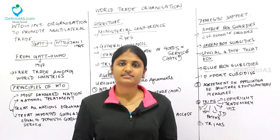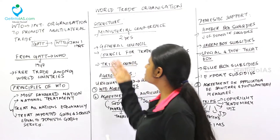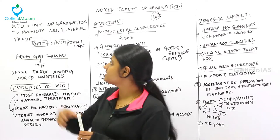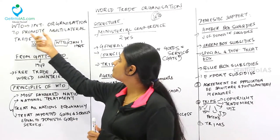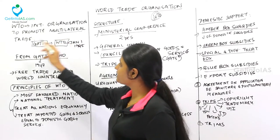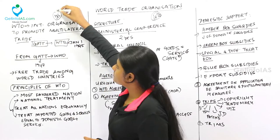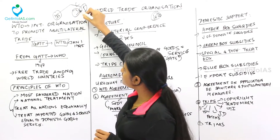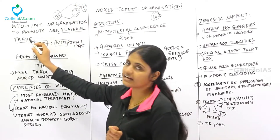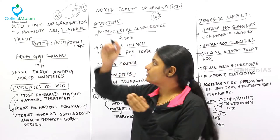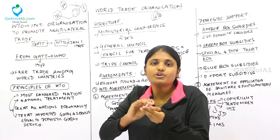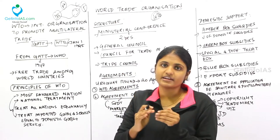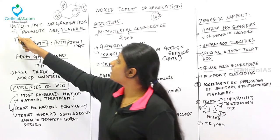Welcome to Get Into IAS. In this video we're going to deal with the World Trade Organization or WTO. The WTO is an international organization established to promote multilateral trade, which involves trade between all countries. For example, the US, India, China, and Japan all inter-trade with each other. Countries trying not to trade with others follow a protectionist policy, which is very harmful for the world economy.